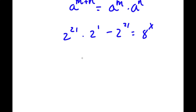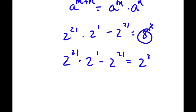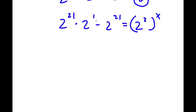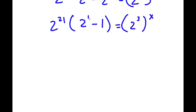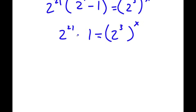From here, 8 is the same thing as 2 to the power of 3. So now I have 2 to the power of 21 times 2 to the power of 1 minus 2 to the power of 21 is equal to 2 to the power of 3 to the power of x. For my left-hand side, if I factor out 2 to the power of 21, I get 2 to the power of 21 times (2 to the power of 1 minus 1). Now, 2 to the power of 1 is 2, and 2 minus 1 is 1. So I'm left with 2 to the power of 21 times 1 is equal to 2 to the power of 3 to the power of x. Since anything times 1 is itself, this simplifies to 2 to the power of 21 is equal to 2 to the power of 3 to the power of x.